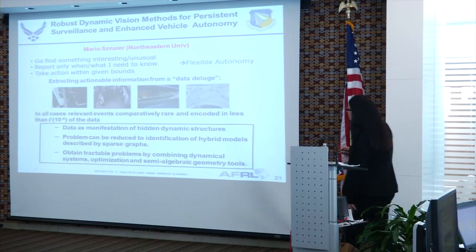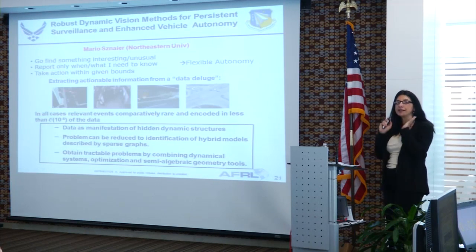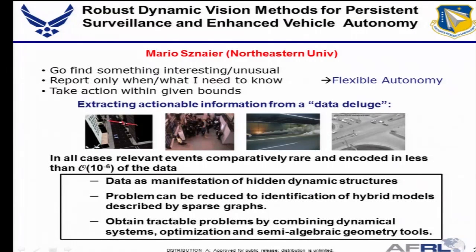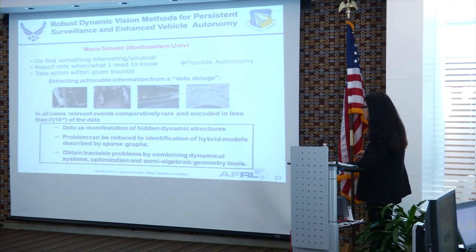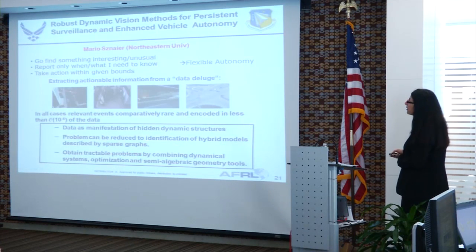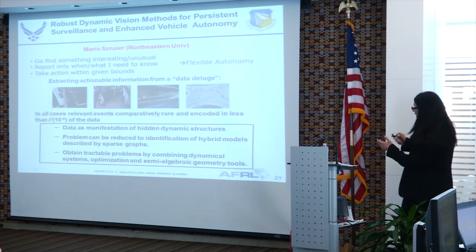This is my PIs' response to compressive sensing. Instead of extracting a sparse signal from sparse observations, you're trying to get sparse actionable information from your data. Because we're dealing with dynamical systems, even though you may have a lot of data, not all of it is going to be important. You can use these ideas in dynamical system identification, reducing the problem to identifying hybrid models described by sparse graphs, combining dynamical systems ideas with optimization to extract actionable information.